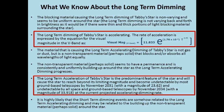We can now add this new information to what we already know about the long-term dimming of Tabby Star. We are adding the derived equation that allows us to calculate the accelerating curve of the long-term dimming expressed as the visual magnitude in the V-band. We are also slightly updating the wording on the limiting magnitude fade-to-black to read: the long-term acceleration of Tabby Star will cause the star to reach beyond its limiting magnitude and become undetectable by most ground-based telescopes by November 2031 with a magnitude of 23.62, and undetectable by all space and ground telescopes by November 2034 with a magnitude of 33.918, at the current projected accelerating dimming rate.